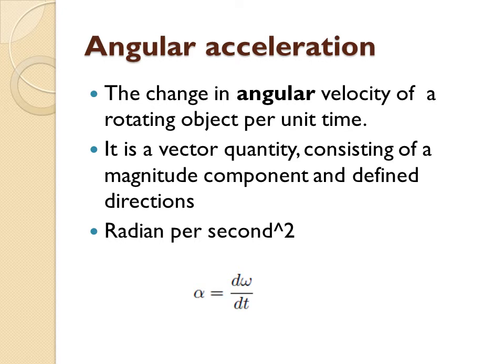Angular acceleration is defined as the change in angular velocity with respect to time — analogous to linear acceleration. It is the change in angular velocity of a rotating body per unit time. It is a vector quantity with magnitude and direction, with units of radians per second squared, and is denoted as alpha = dω/dt.